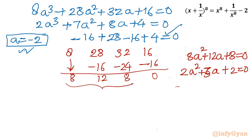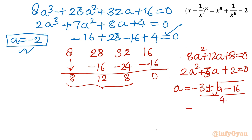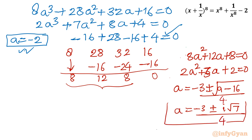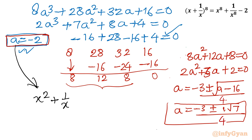Applying the quadratic formula: A equals minus b plus or minus square root of (b^2 - 4ac) over 2a, which gives A equals (minus 3 plus or minus square root of 9 minus 16) over 2. So we have three solutions total. The root A equals minus 2 back-substitutes as: x^2 + 1/x^2 equals minus 2. Taking 2 to the left: x^2 + 1/x^2 + 2 equals 0.